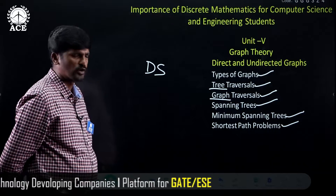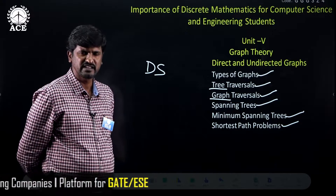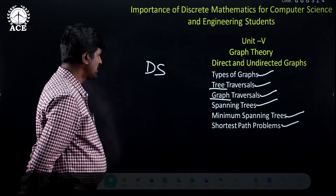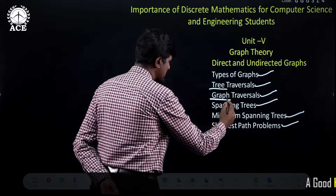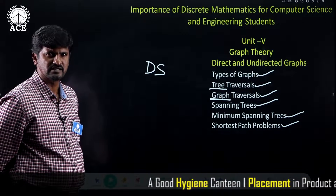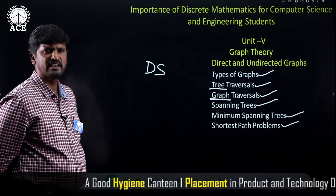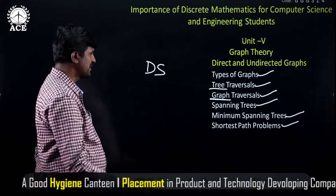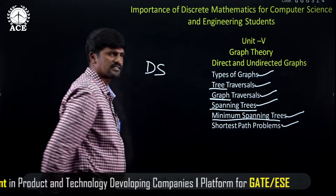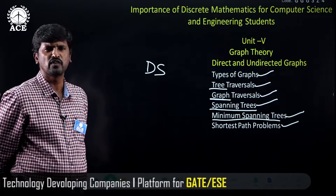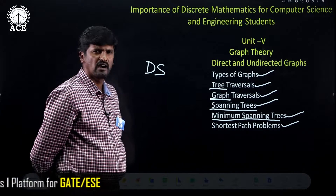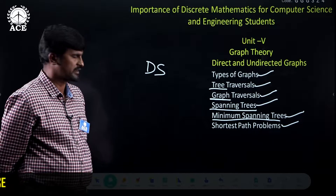Students will study tree traversal techniques — in-order, pre-order, and post-order. Similarly, there are two graph traversal techniques: BFS (breadth-first search) and DFS (depth-first search). BFS and DFS are used to find spanning trees. There are also minimum spanning trees, and two algorithms to find them: Kruskal's algorithm and Prim's algorithm.